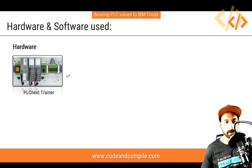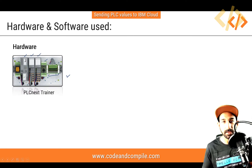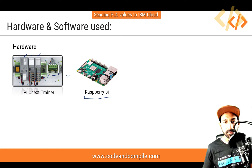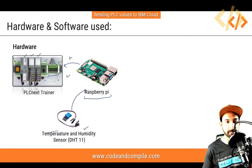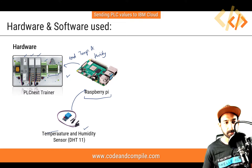For hardware, I'm using PLC Next Trainer, which has a PLC inside with analog and digital I/Os, a potentiometer and some switches. If you've seen my last videos, I've explained how the PLC Next Trainer works. I'm also using a Raspberry Pi, because we have sensors — a temperature sensor and humidity sensor — connected to my Raspberry Pi. The PLC will read temperature and humidity from this Raspberry Pi and then send the values further to the cloud.